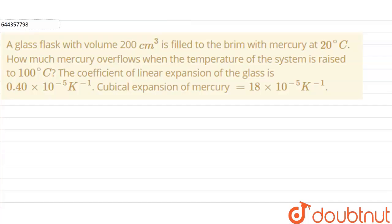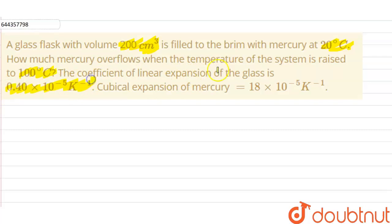Hello everyone. Our question is: a glass flask with a volume of 200 centimeter cube is filled to the brim with mercury at 20 degree Celsius. How much mercury overflows when the temperature of the system is raised to 100 degree Celsius? The coefficient of linear expansion of the glass is 0.4 into 10 raised to the power minus 5 per Kelvin, and the cubical expansion of mercury is 18 into 10 raised to the power minus 5 per Kelvin.